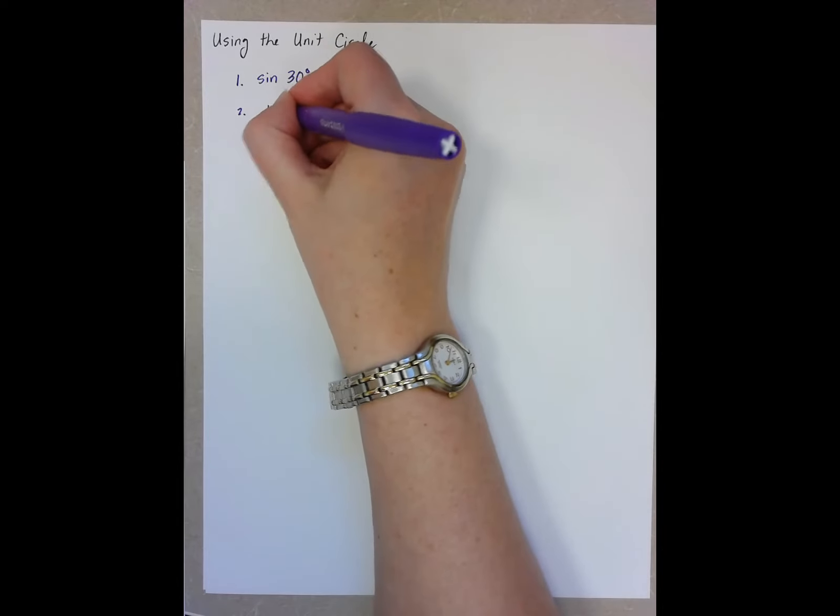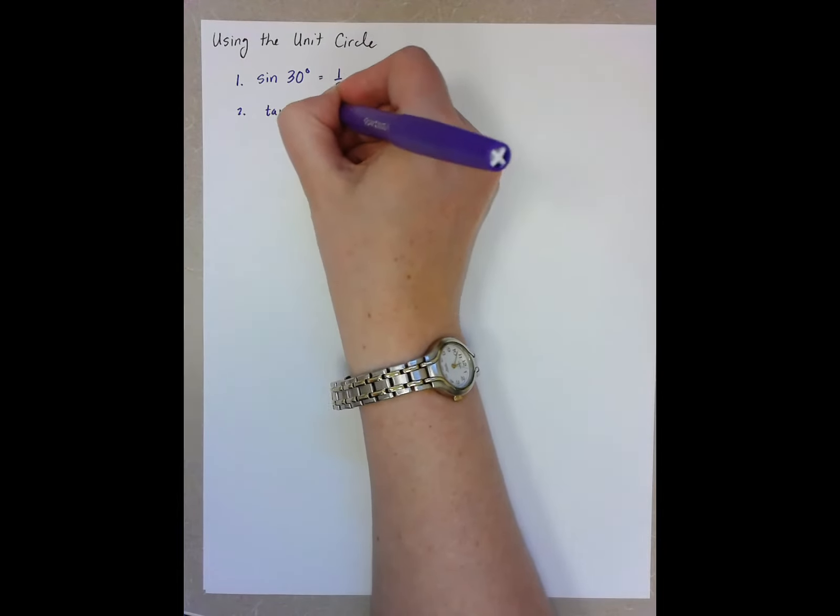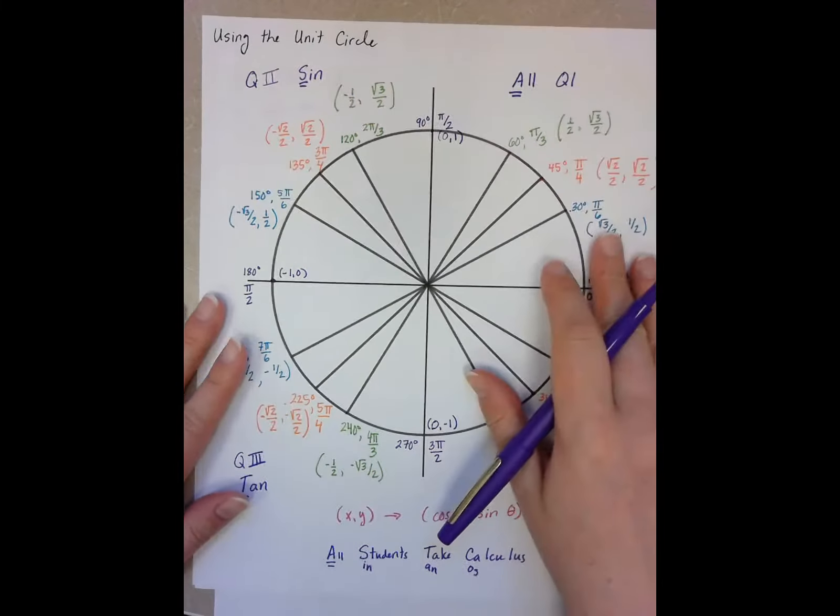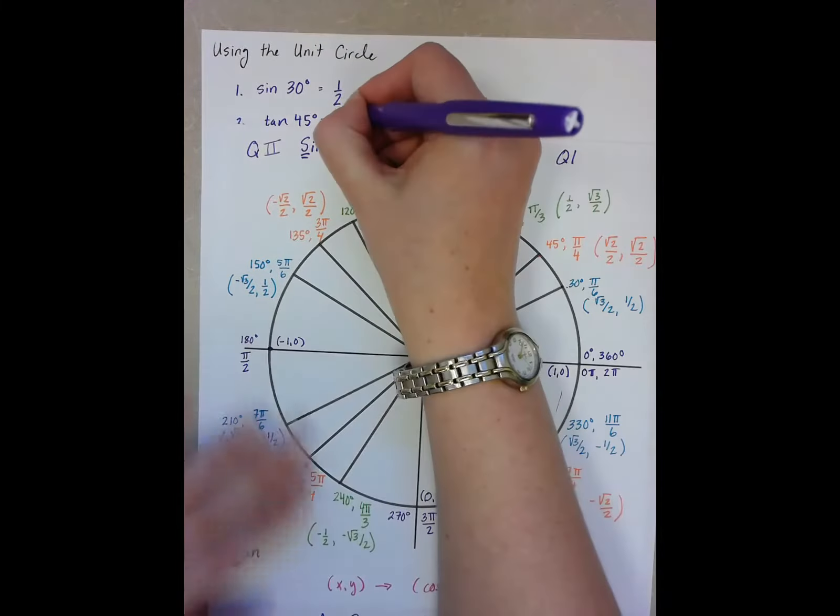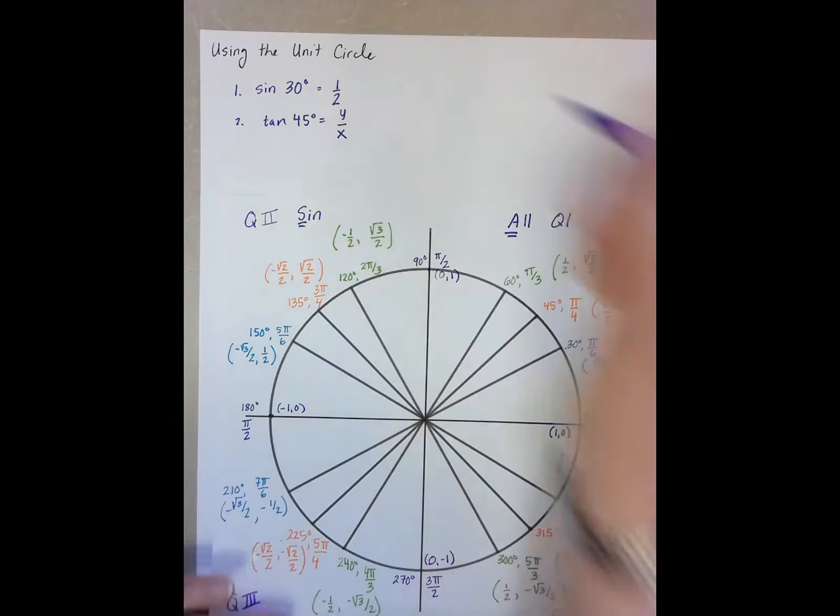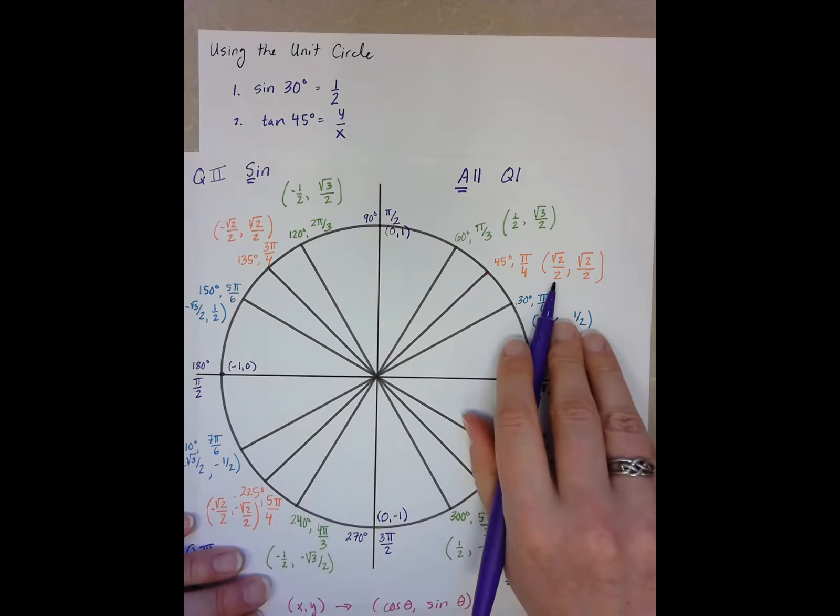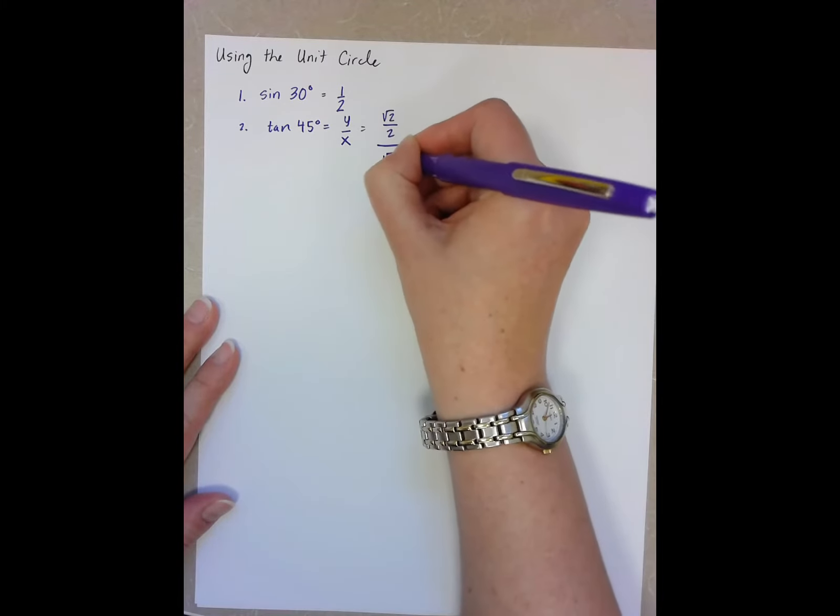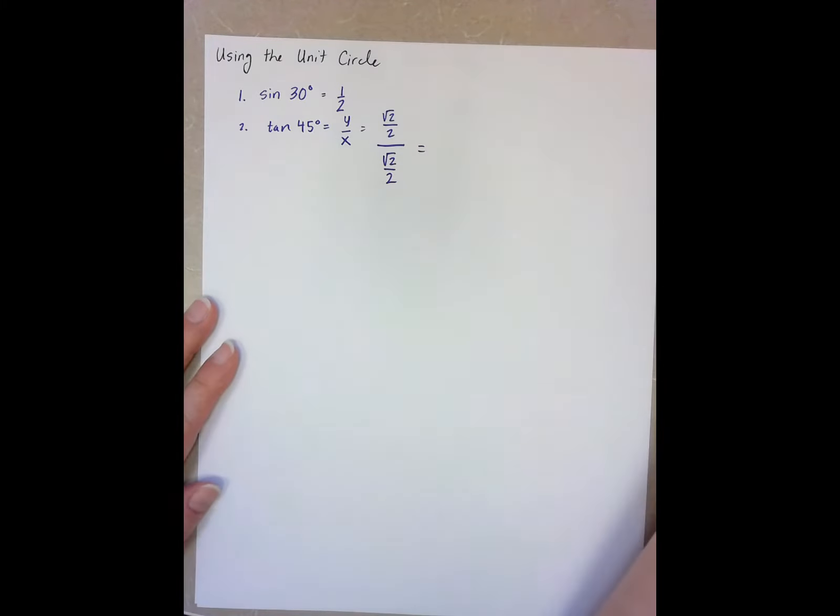Tan 45 degrees. Well, we know 45 degrees is right here. We know that tan is y over x, and my y and x are root 2 over 2 divided by root 2 over 2. Of course, the same number divided by itself is 1, so tan of 45 is 1.